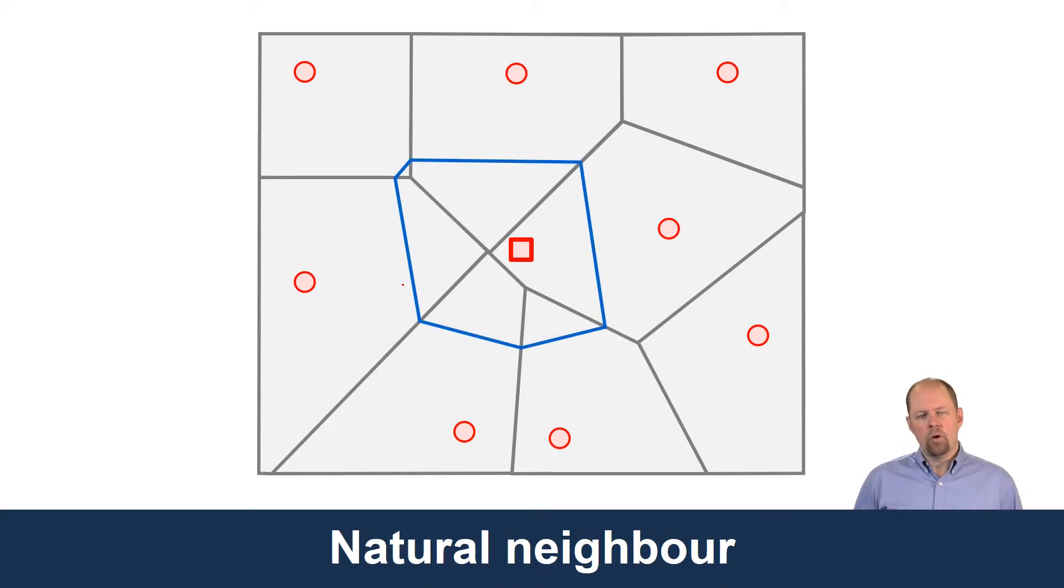This method creates a new Thiessen polygon as though this square actually existed as a sample point. Now we have a new boundary that's halfway between these two points, another boundary halfway between these two points, and so on. This blue line represents what would be a new Thiessen polygon if that point was introduced into our dataset. It's not a real point, we're estimating it, but that's what it would look like.